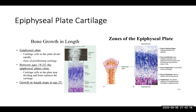Bone growth stops at around age 25. Between ages 18 and 25, the epiphyseal plate completely closes and cartilage cells stop dividing. The five zones of the epiphyseal plate begin with resting cartilage, then cells proliferate — increase in number — then hypertrophy — increase in size — then they become calcified and finally ossified.